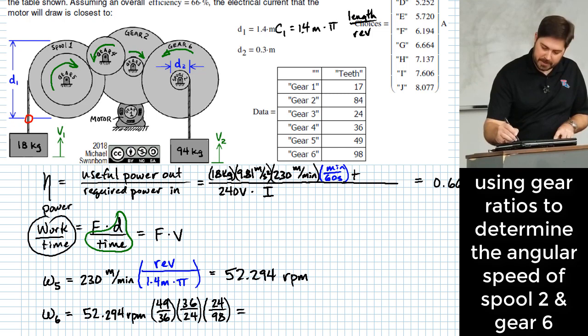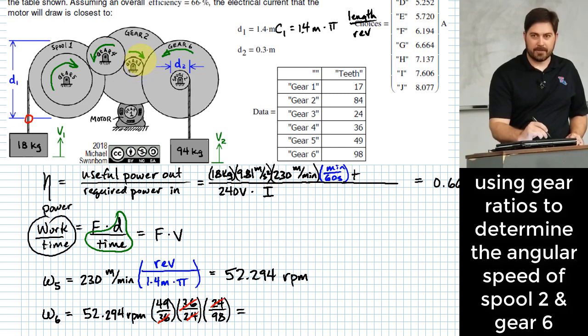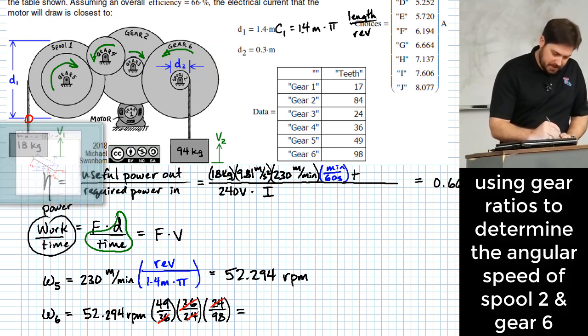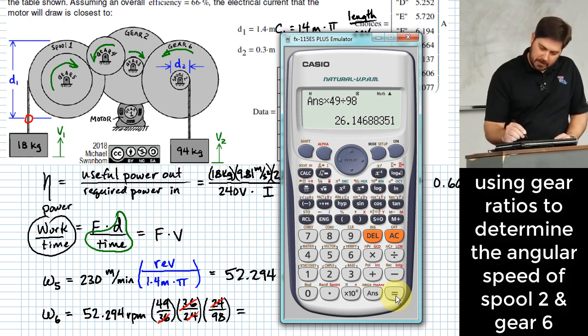Notice here that 36 and 36 will cancel, 24 and 24 will cancel. And what you can tell by that is that it actually didn't matter for this question how big gear four and gear three were. It's almost like gear five was mating directly with gear six. So that's a side note, but we'll go ahead and calculate this. Take this number and multiply by 49 over 98. And that gives me 26.147.